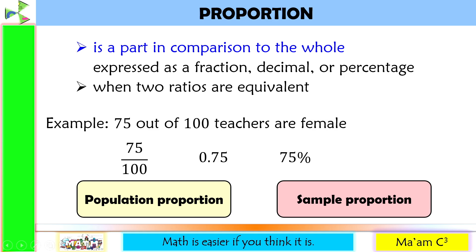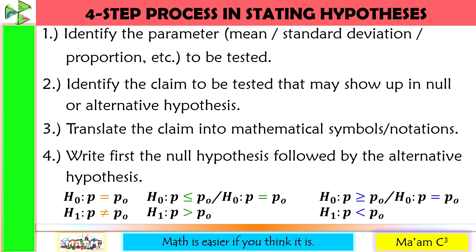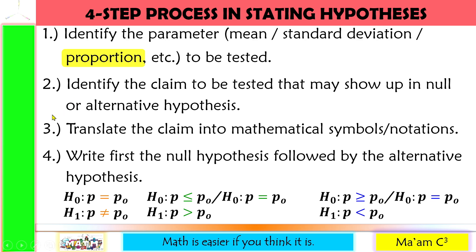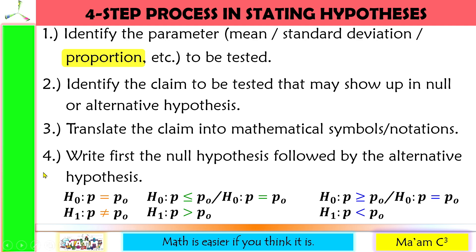We will focus our attention on formulating hypothesis for proportion. We are still going to follow the four-step process: Step 1, identify the parameter — since our lesson is about population proportion, the parameter is proportion. Step 2, identify the claim to be tested that may show up in null or alternative hypothesis. Step 3, translate the claim into mathematical symbols or notations. And step 4, write first the null hypothesis followed by the alternative hypothesis.